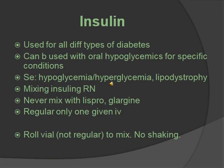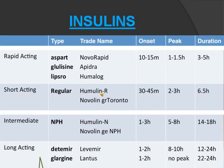Insulin can be used with all types of diabetes — gestational, type 1, type 2 — and can be combined with oral hypoglycemics in specific conditions like pregnancy or liver disease. Side effects are hypoglycemia or hyperglycemia and lipodystrophy, which is missing fat at injection sites. When mixing insulin, remember RN: Regular before NPH. Never mix with long-acting insulins like lispro or glargine. Regular insulin is the only one that can be given IV. Roll the vial but do not shake it. You'll need to know the insulin chart covering onset, peak, and duration for rapid, short-acting, intermediate, and long-acting insulins — take a picture and memorize it.